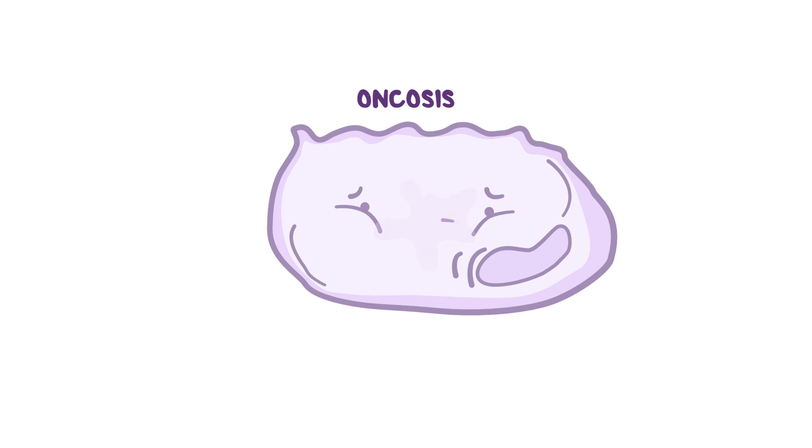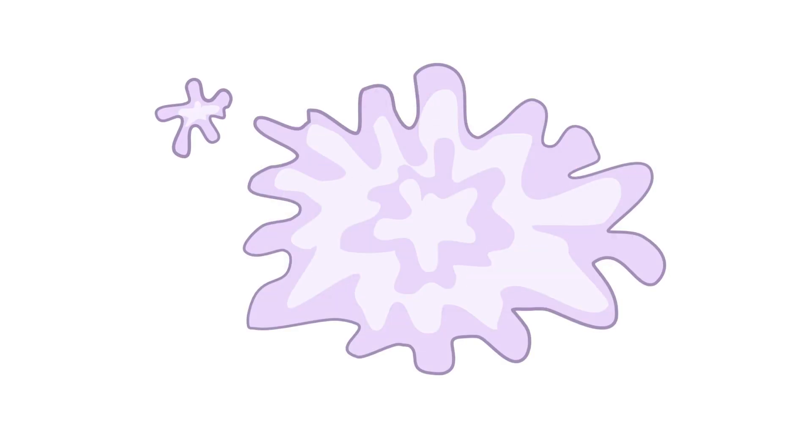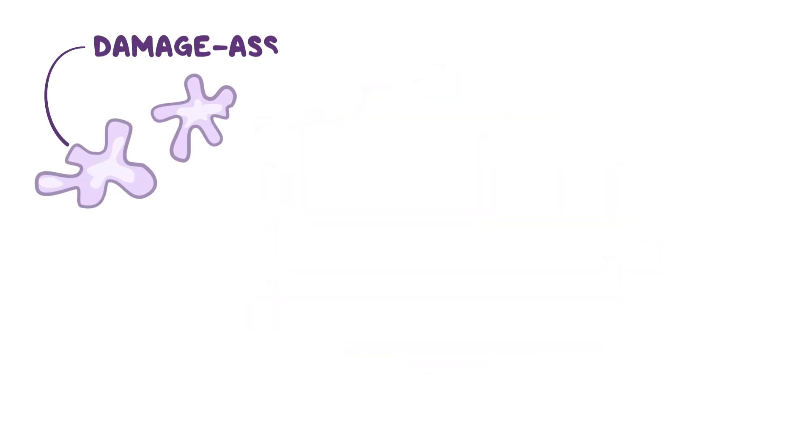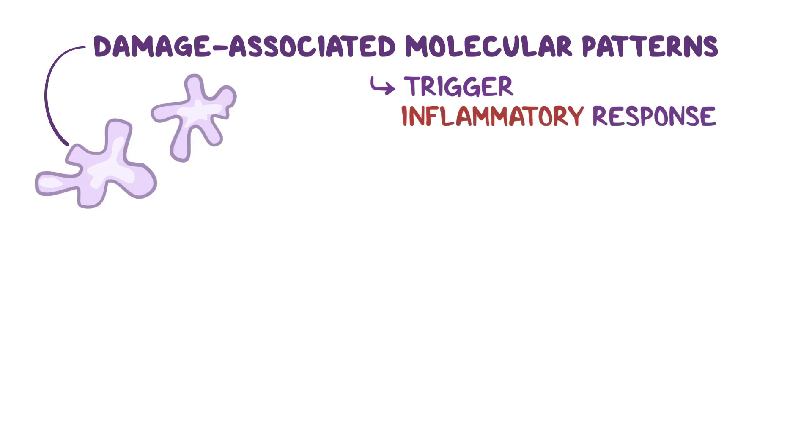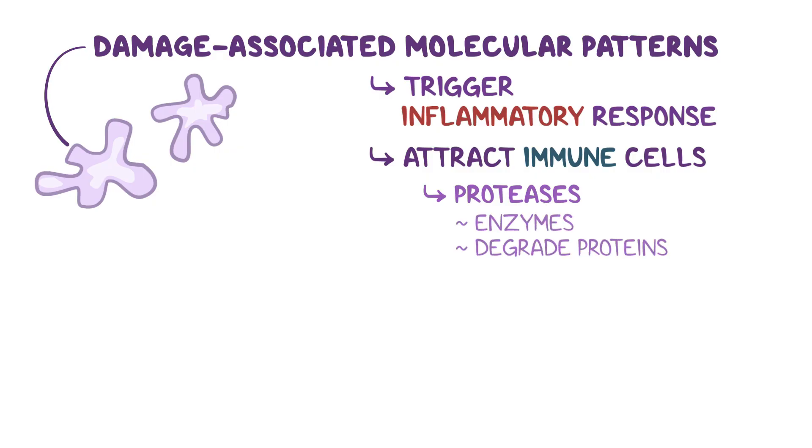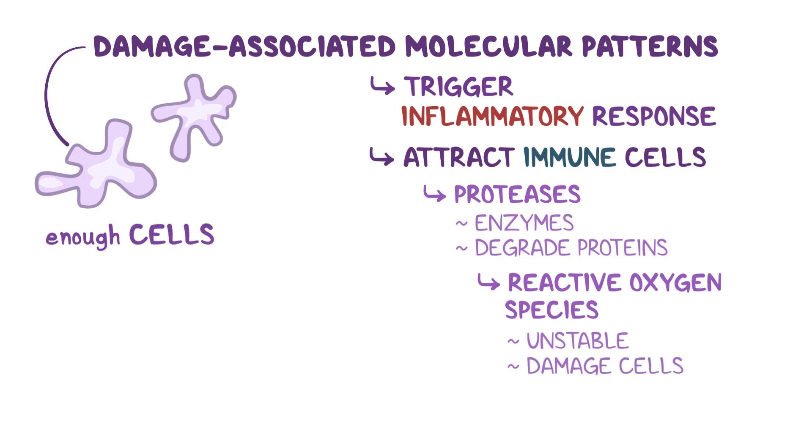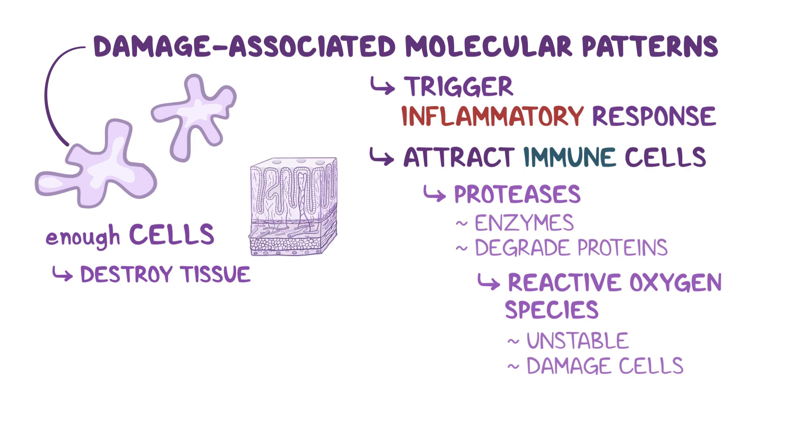Soon, the cell bursts and spills its internal contents and small molecules, called damage-associated molecular patterns, into the surroundings. These molecules trigger the inflammatory response and attract nearby immune cells to release substances like proteases, which are enzymes that degrade proteins, and reactive oxygen species, which are unstable molecules that can damage other cells. If this inflammatory process occurs among enough cells, it can destroy the tissue, and if it happens on a massive level, it can lead to organ dysfunction.